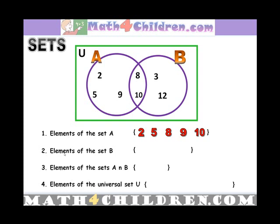And what do you now think are elements of set B? Elements of set B are 3, 8, 10, and 12.